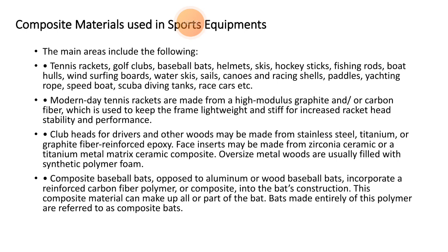The main areas of carbon fibre composite application include tennis rackets, golf clubs, basketballs, bats, helmets, skis, hockey sticks, fishing rods, and boat hulls. In modern days, tennis rackets are made from high-modulus graphite and carbon fibre.